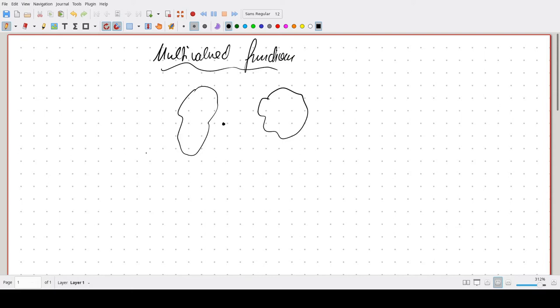So one example we can consider is the function z is mapped to the alpha power where alpha is not a natural number. Then you can sort of always locally define that function but you run into problems when you're trying to define it everywhere.